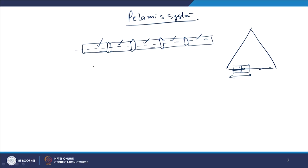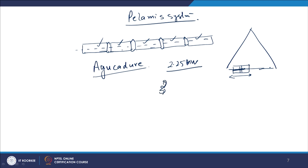The first Pelamis plant was started in Portugal. There are three systems, each producing 750 kilowatts, together producing 2.25 megawatts.